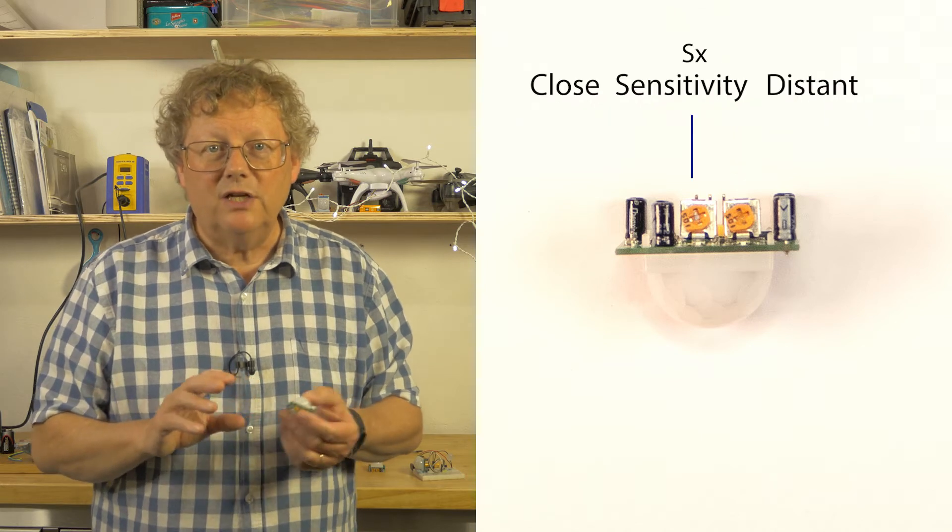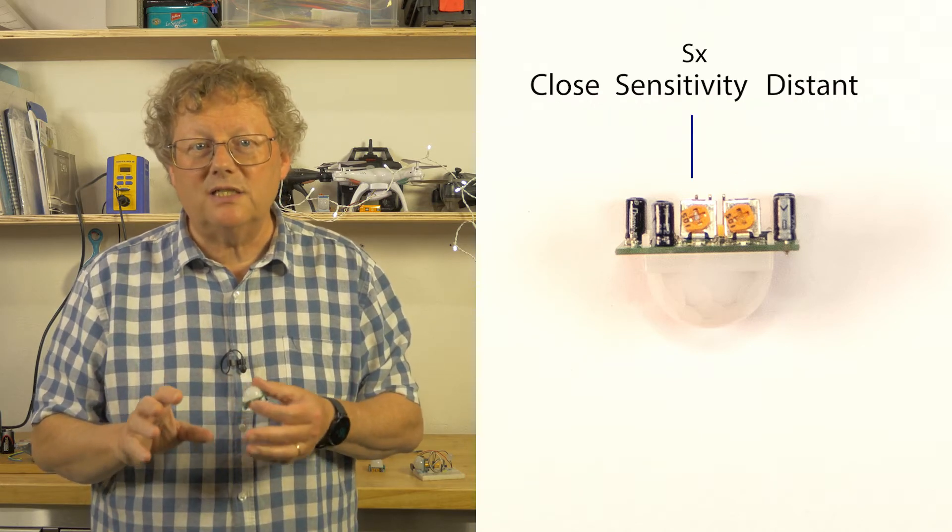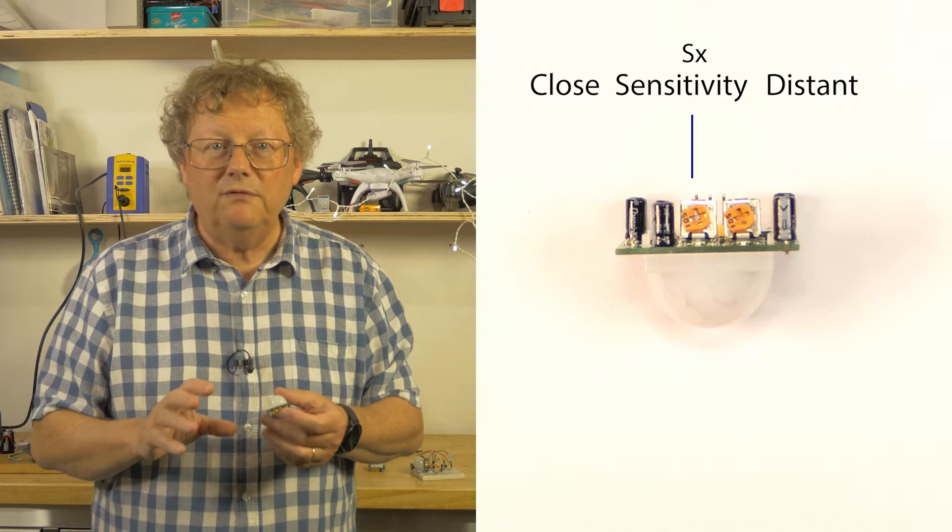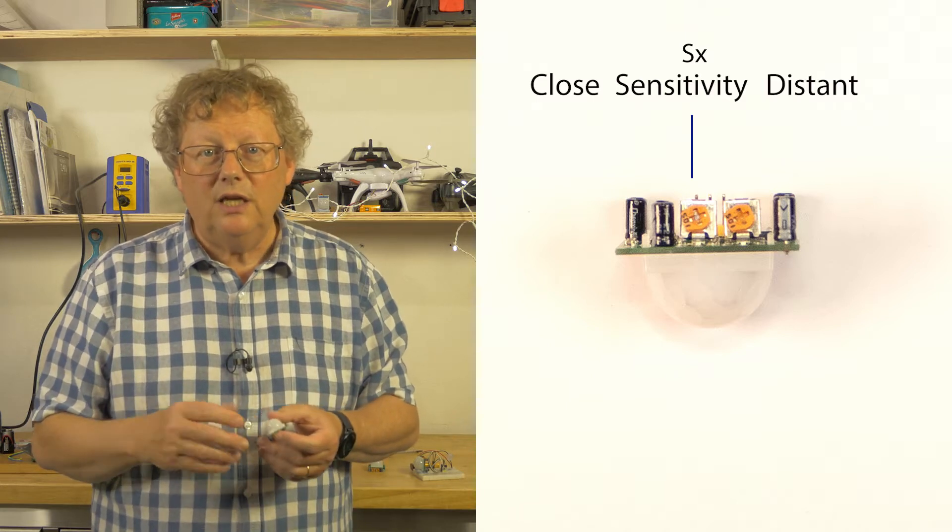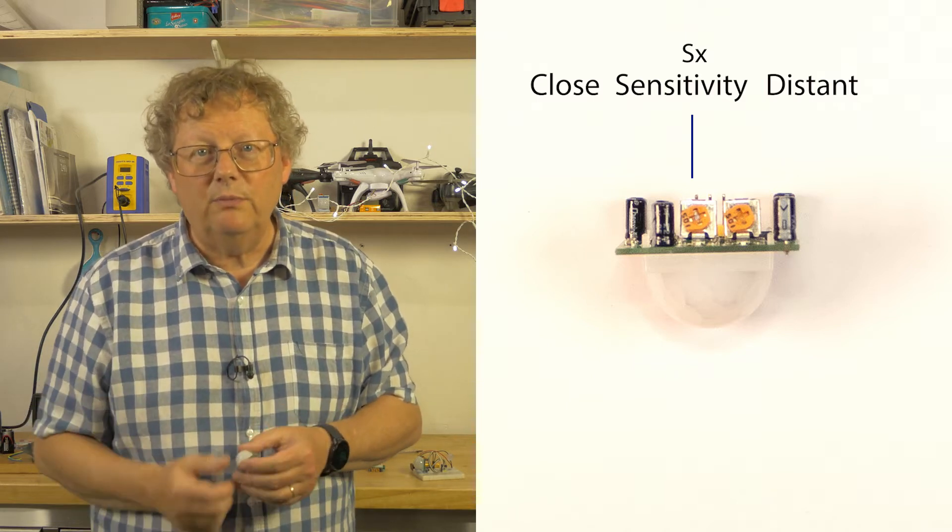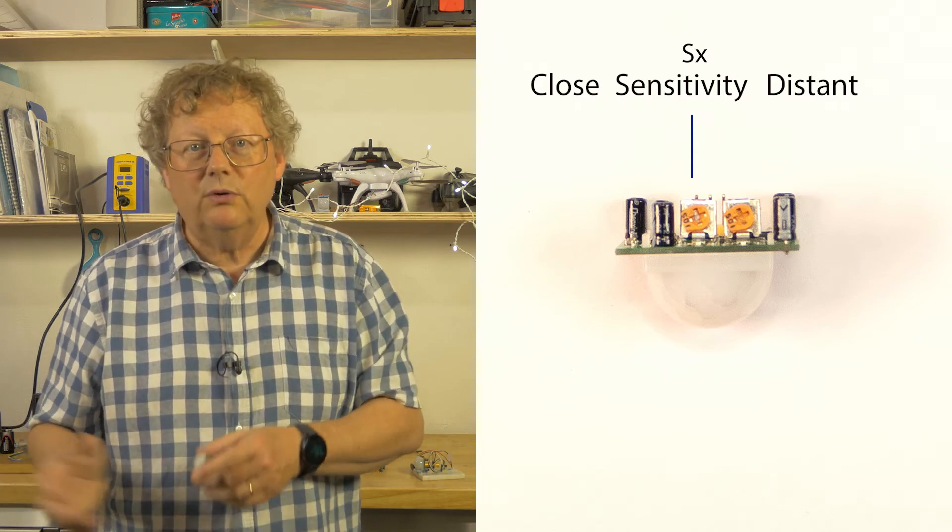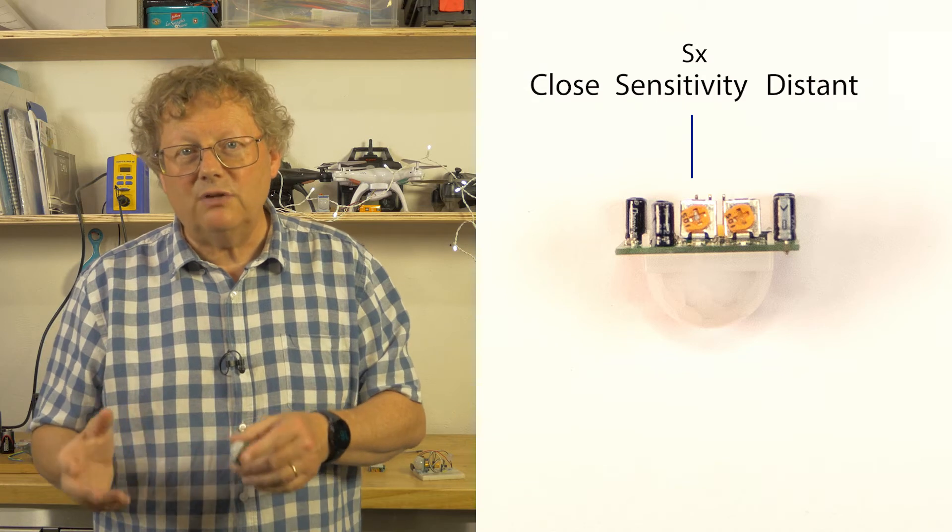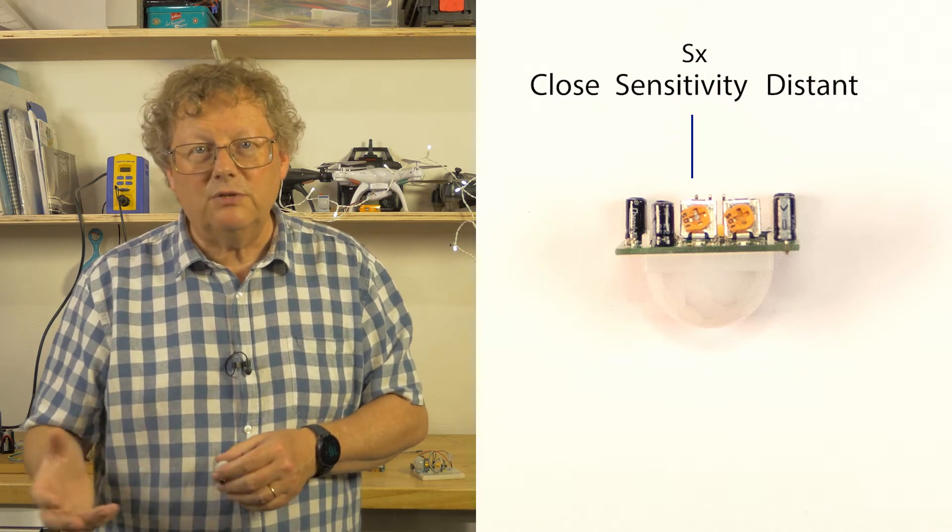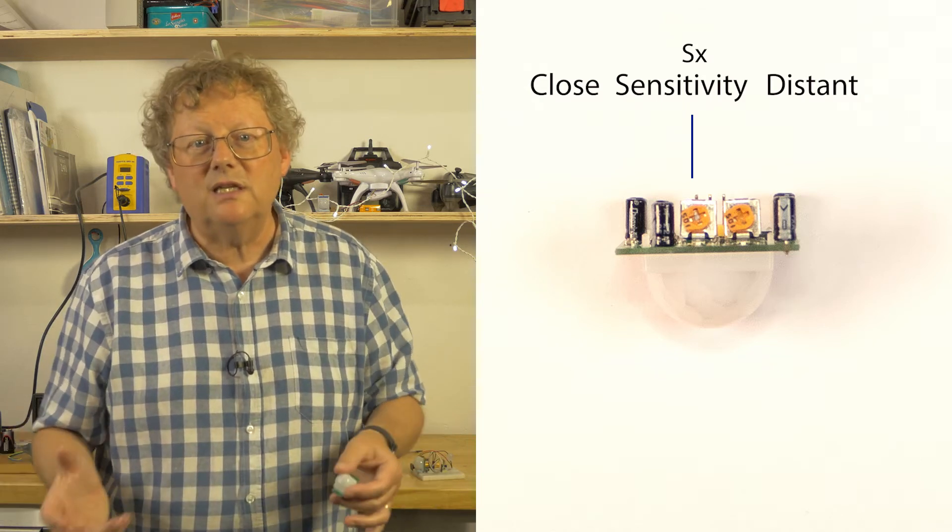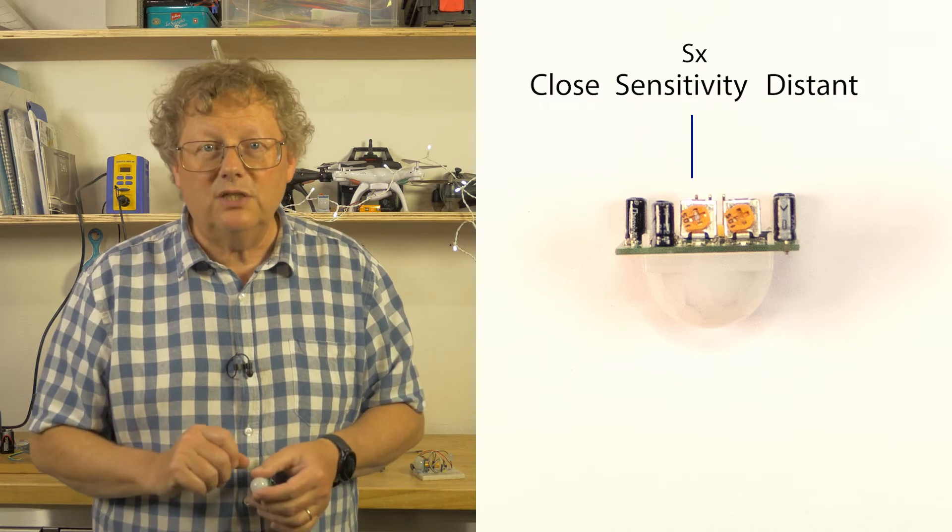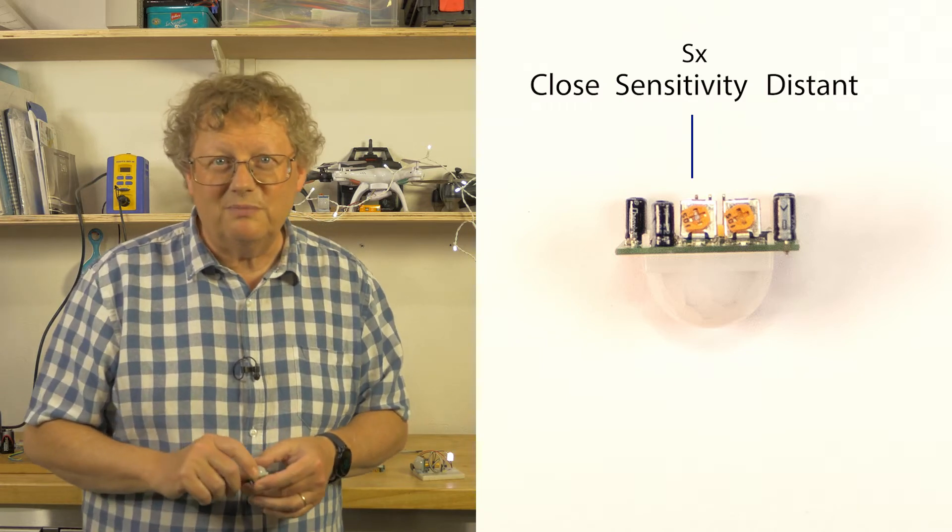The left side trimmer or the one marked SX adjusts sensitivity. When it's turned fully left or counterclockwise you have to really get close before being detected. As you turn it to the right or clockwise it becomes more and more sensitive and it's best not to go too far with this or it just keeps triggering all the time at the slightest disturbance. So a midway position will probably suit most situations best.